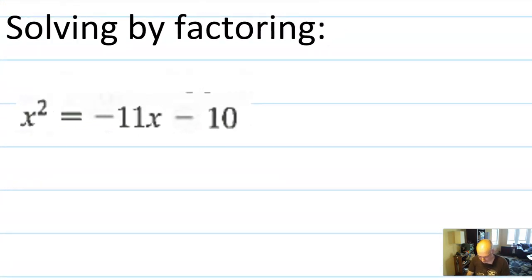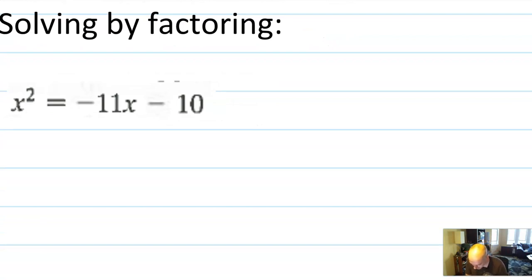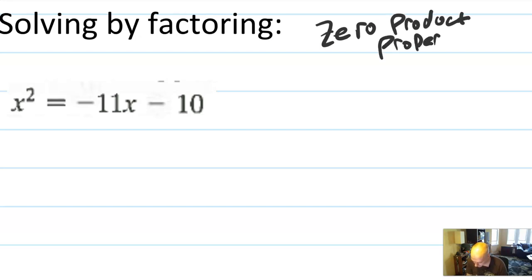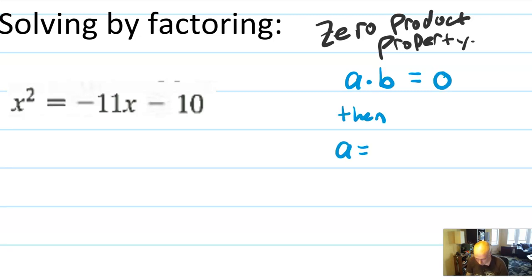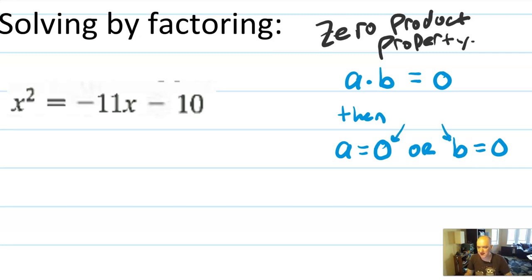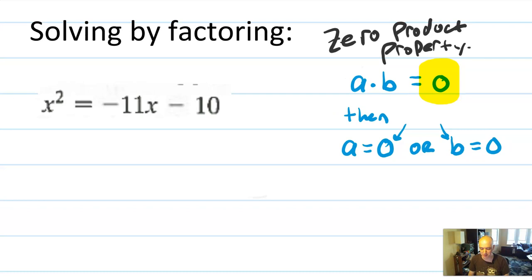Next: solving quadratics by factoring. Factoring is wonderful. The main property is called the zero product property. It says: if you have a × b = 0, then either a must be zero or b must be zero. What that lets you do is take a product and split it into two equations — that's how you get the two answers you usually have in a quadratic. This only works if it's equal to zero. There's no 'two product property' — it's a special property of the number zero.